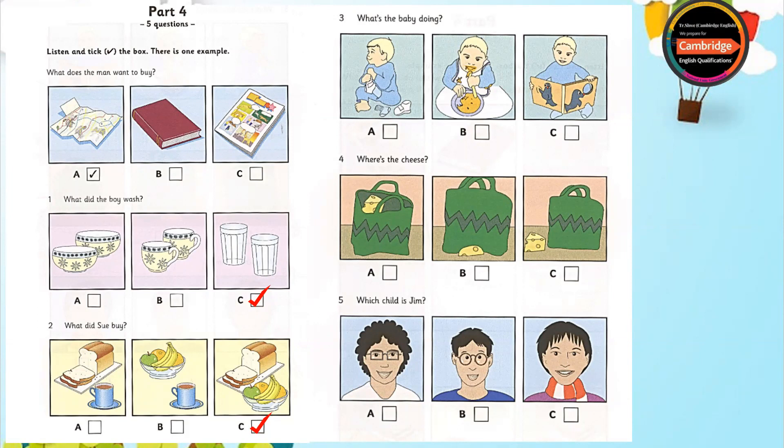4. Where's the cheese? I need it for the sandwiches. It's in your shopping bag, I think. Or is it on the table? No, I looked there. Oh, here it is. It's under my bag. Oh, yes. I didn't see it there. Sorry.